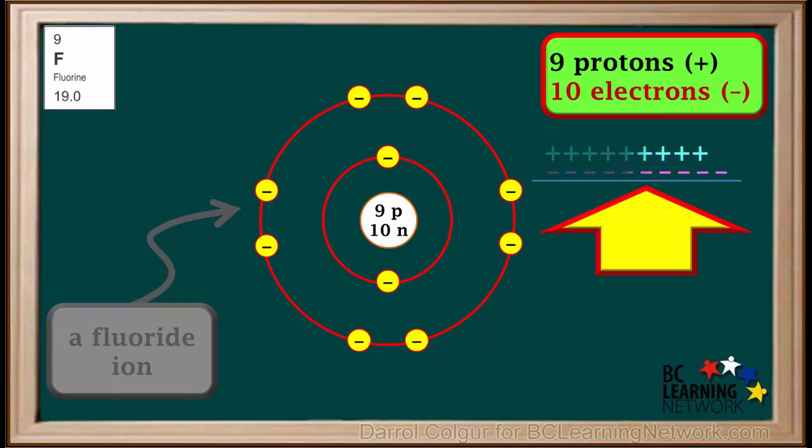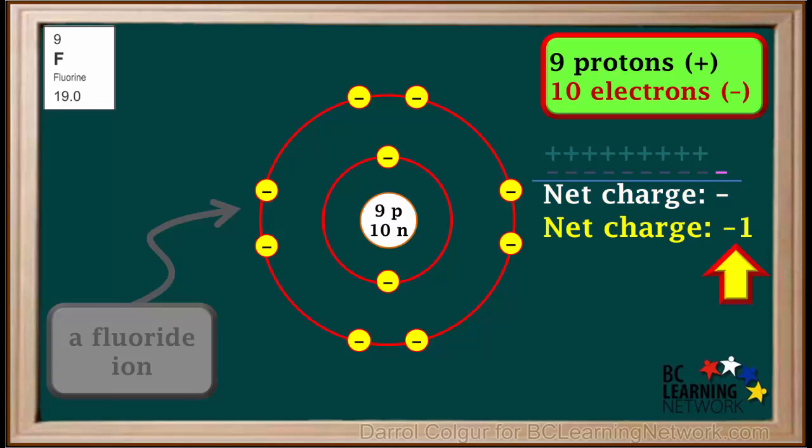Positive and negative charges neutralize each other, and what is left over is called the net charge, which is negative 1 in this case. So we can say that the net charge on this ion is negative 1, or 1 negative.